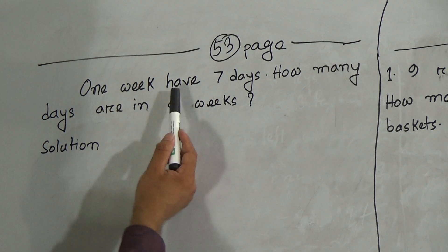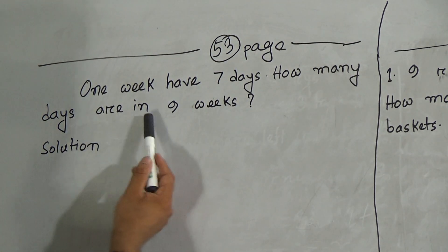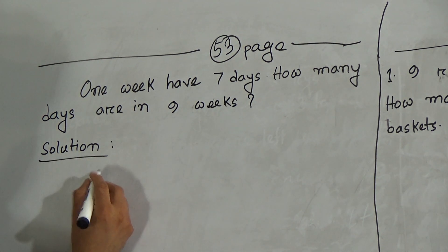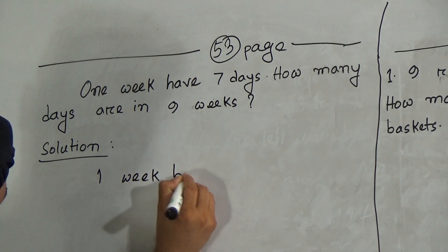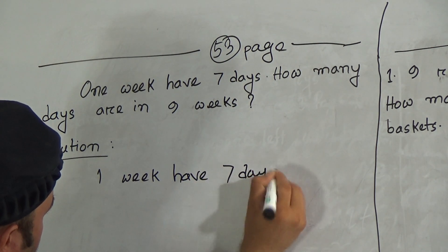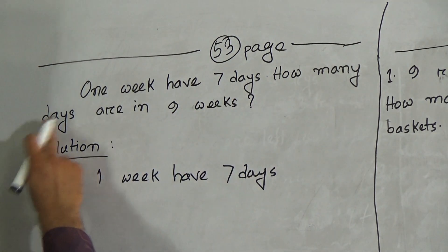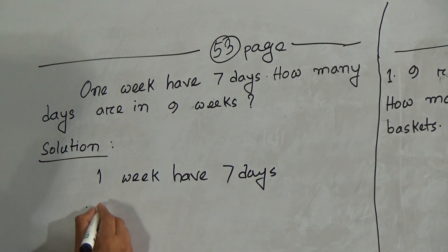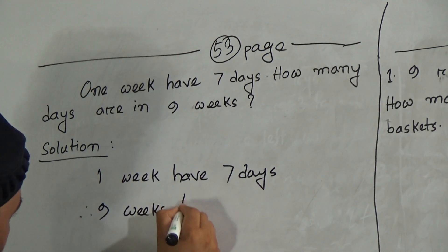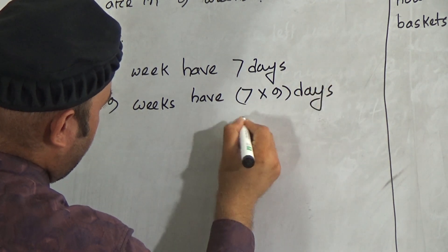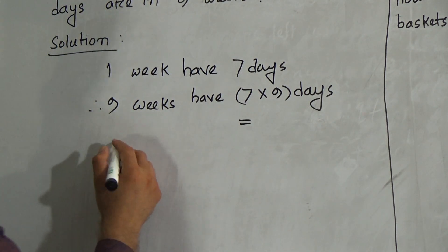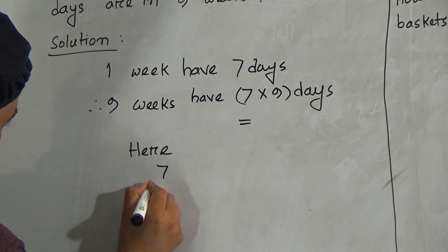Let's start our class. On page 53, problem one: one week has seven days. How many days are in nine weeks? So here, one week has seven days, and we have to determine how many days are in nine weeks. Therefore, nine weeks have seven multiplied by nine days.